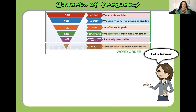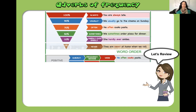Now, some word order for adverbs of frequency. In a positive sentence, we have our subject, then our adverb of frequency, then our verb. For example: 'He often cooks pasta.' Here, 'he' is the subject, 'often' is the frequency adverb, 'cooks' is the verb, and 'pasta' is the object. This is a positive sentence.